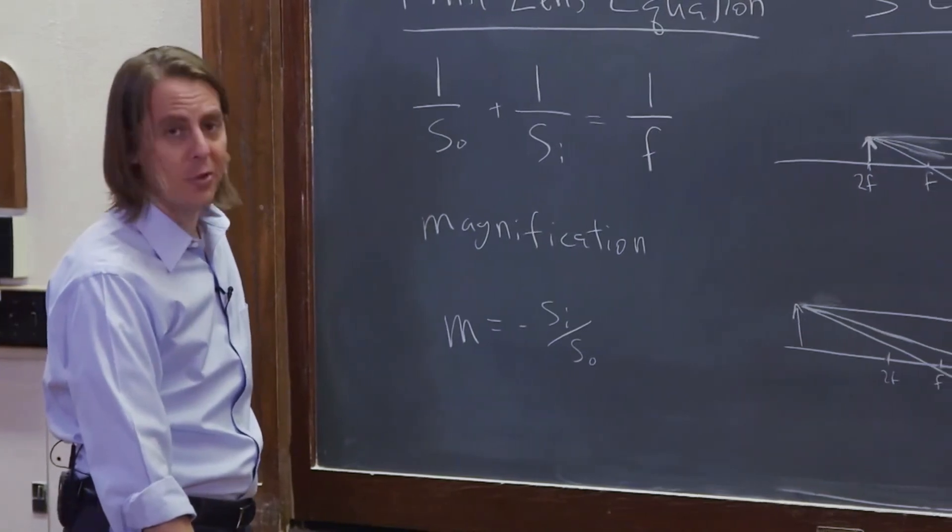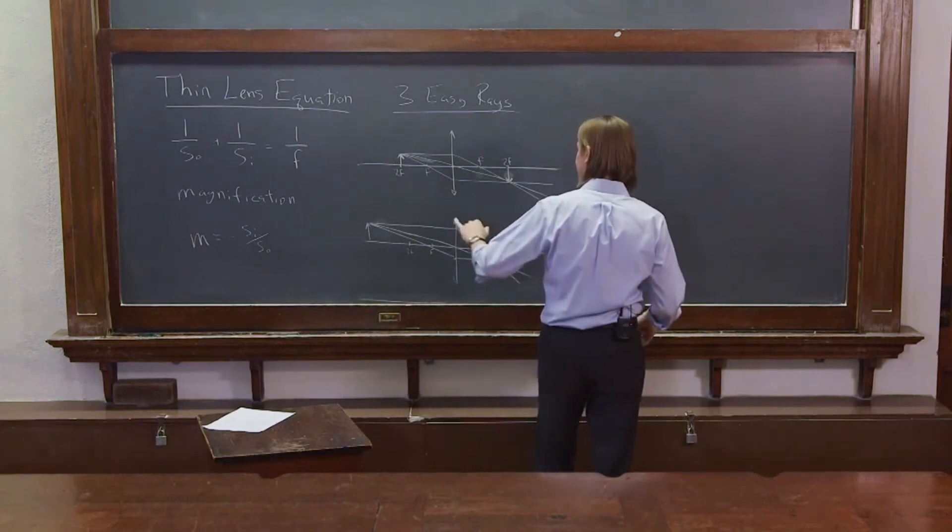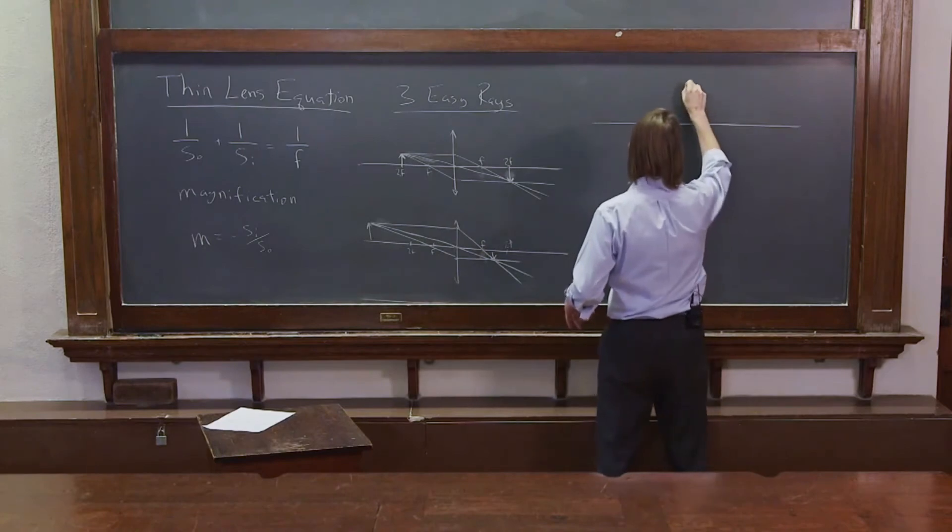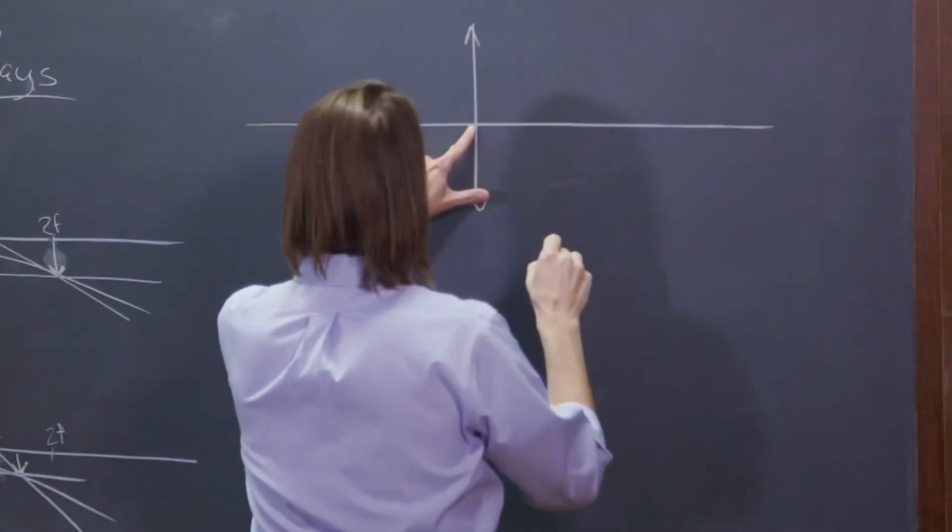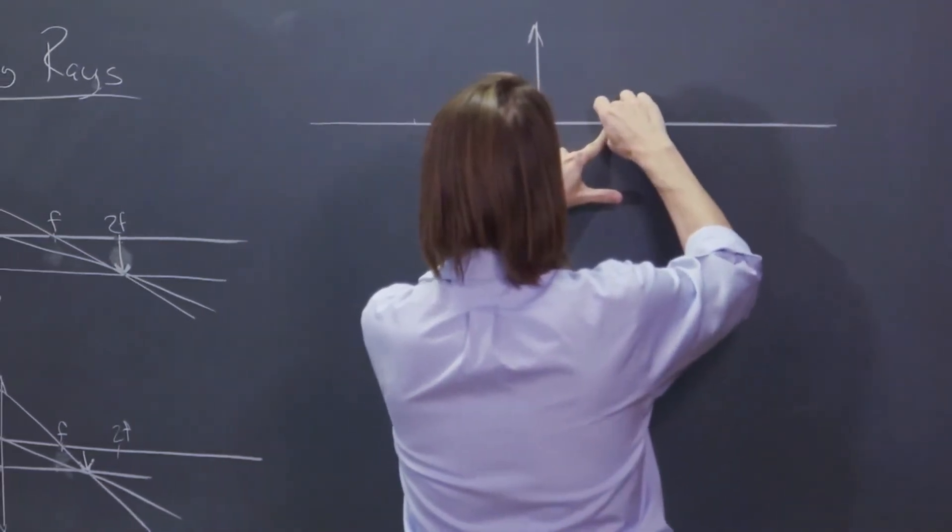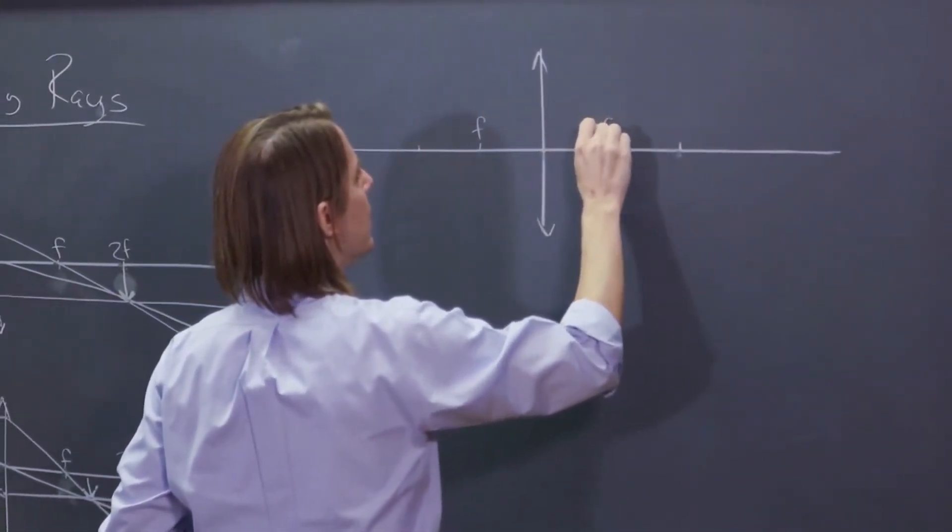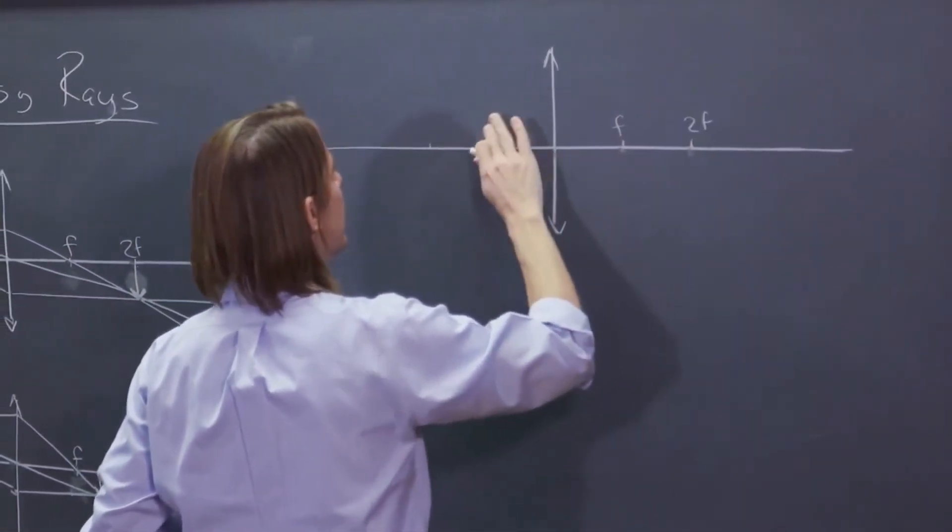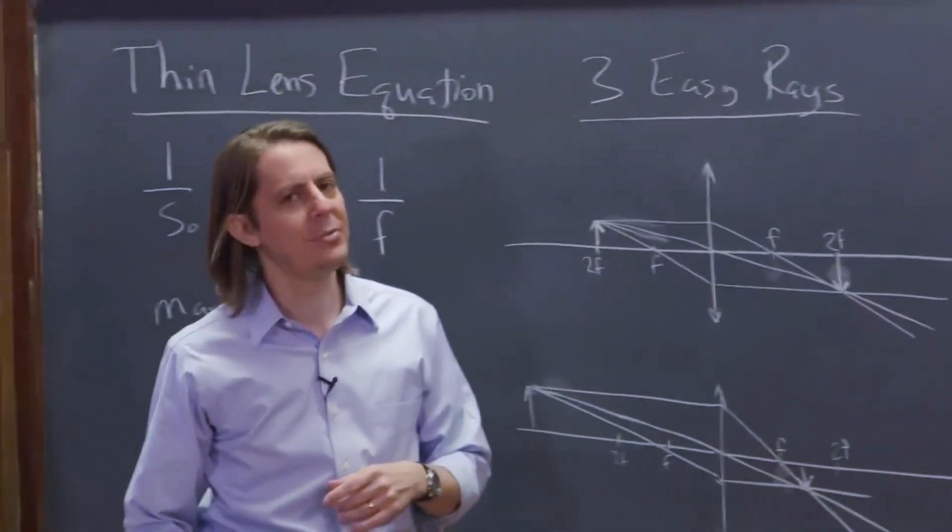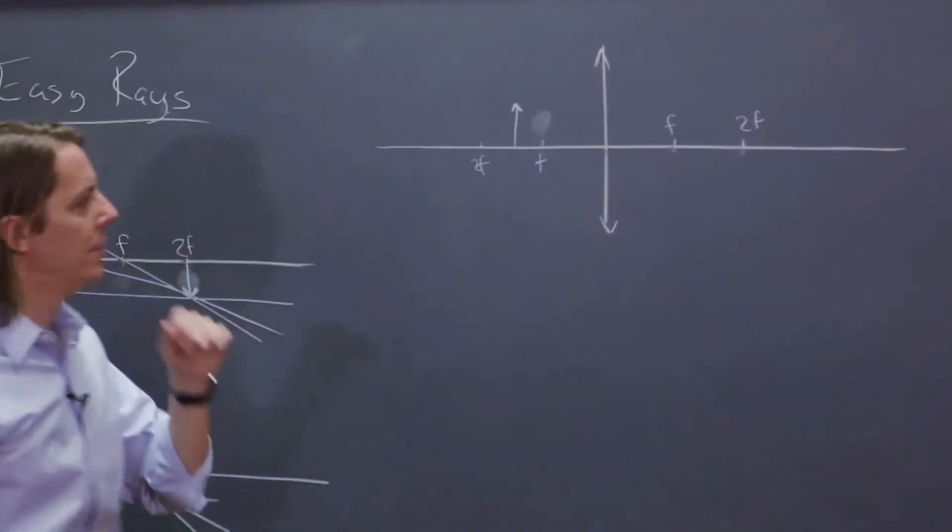Let's go the other way. Let's put the object between f and 2f. Here we go. There we go. And there's our lens. And there is f and 2f. There's f. There's f. There's 2f. There's f. I don't really need to label 2f anymore. Now we're going to put the object inside of 2f, but outside of f. There it is.